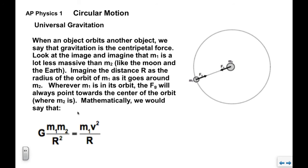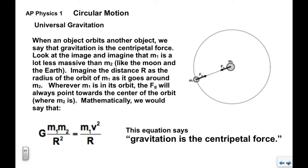Mathematically, we would say this. On the left side, this is the gravitational force formula. On the right, we have MA for the object that's moving in the circular path. M1 is the object that's doing the orbiting, it's doing the circular path. So very simply, this relationship says gravitation is the centripetal force.